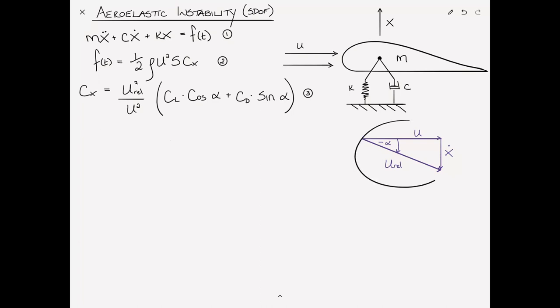Now, from this drawing, we can come up with an expression for α or for the tangent of α. We can write that negative α is equal to the inverse tangent of x dot over u. Using the small angle formula, we can say that's approximately equal to x dot over u. Therefore, we can write α as negative x dot divided by u. Call that equation 4.